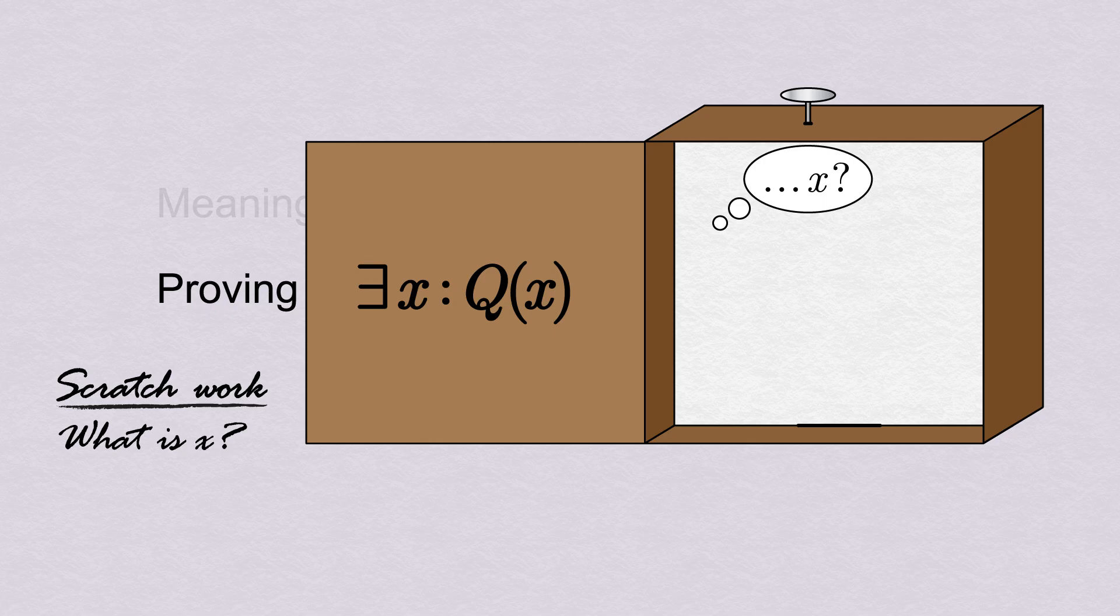Our scratch work to find x can use algebra, guess and check, correct or even incorrect logic, or simply blind inspiration. The how is literally irrelevant to the proof. All that matters is that we can somehow, by hook or by crook, find a value x for which Q(x) is true.